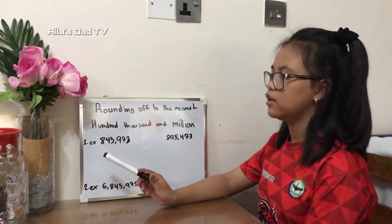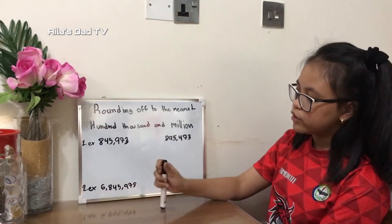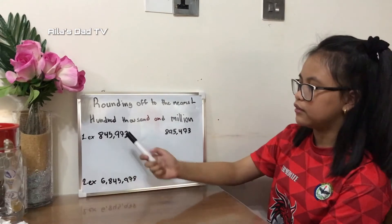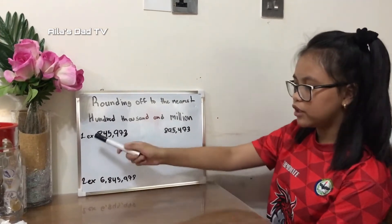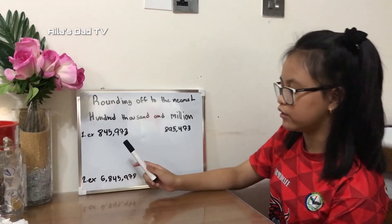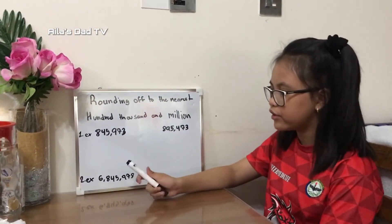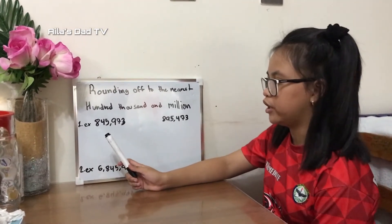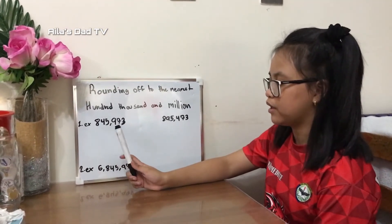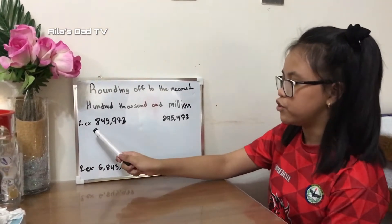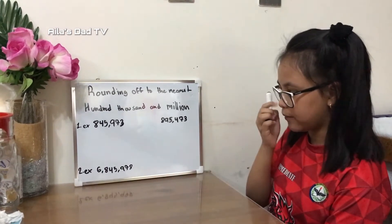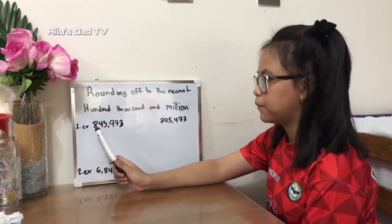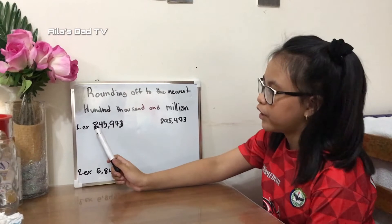Here is our first example. We will be rounding off this number to the nearest hundred thousand. The first step is to identify the number in the hundred thousands place, which is eight. The next step is to look at the digit to the right of eight.